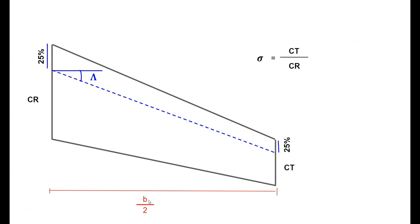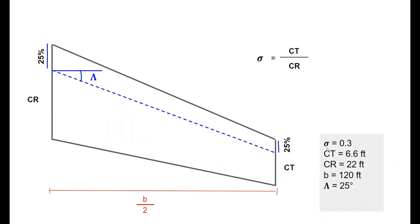Because I'm showing half of the wing, I've defined the span as V over 2, which is half of the span. Here is the sweep angle, which is located at the quarter cord line — that is 25% of the root cord and 25% of the tip cord. The values I will be using are a taper ratio of 0.3, a tip cord of 6.6 feet, a root cord of 22 feet, a span of 120 feet, and a sweep angle of 25 degrees. The sweep angle is taken with respect to the horizontal line and is located at the quarter cord line.